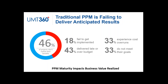The truth of the matter is that traditional PPM processes and tools are failing to deliver anticipated results. Industry analysts may not agree on the exact stats, but they all agree there is an overarching problem. Standish Group claims that 18% of projects fail to get delivered, and 43% come in late or over budget. Gartner sees that one out of three completed projects experiences significant cost overruns, and even PMI recognized that 33% of projects fail to deliver on their business objectives from the get-go.